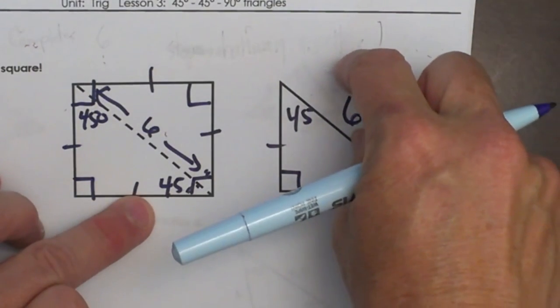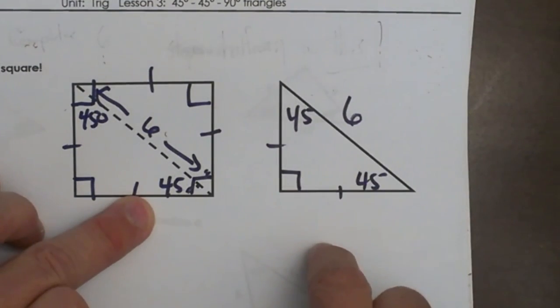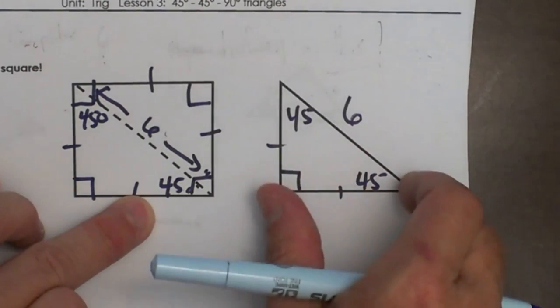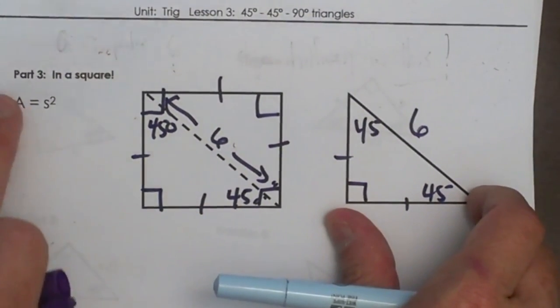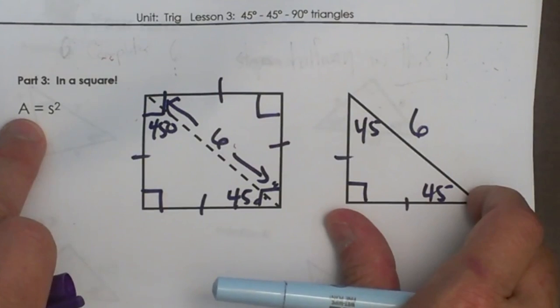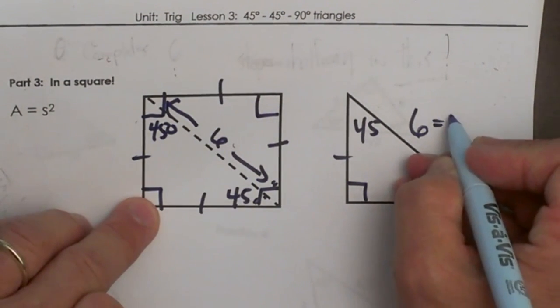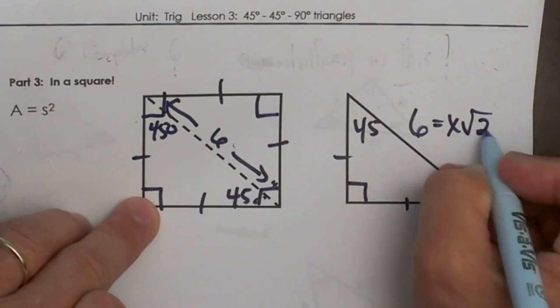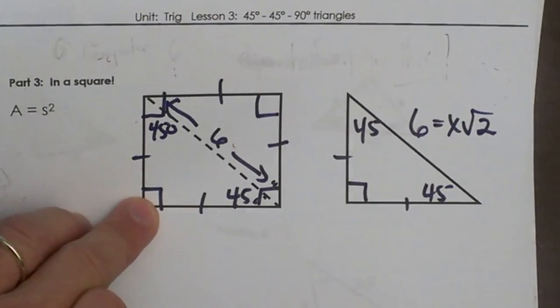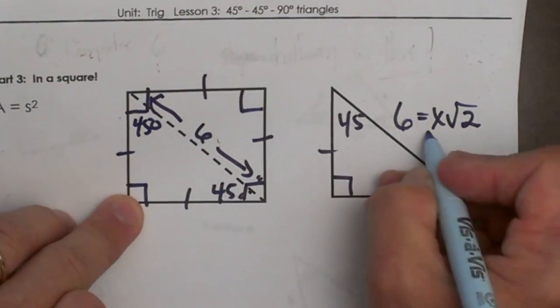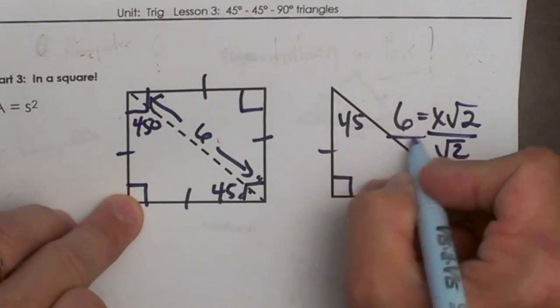How do you work from the hypotenuse backwards to the leg? I can figure out the side because in my formula for area I need my side to square it. We know that this is x√2 so we can set the hypotenuse equal to x√2 and then just divide both sides by the √2.